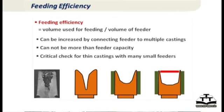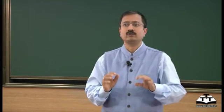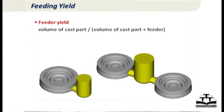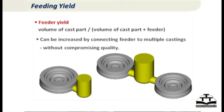Capacity is what a feeder can actually supply; efficiency is what is actually supplied to a particular casting, and what is actually supplied cannot exceed the theoretical capacity. Yield — specifically feeding contribution to yield — is the actual volume of the cast part divided by the volume of the cast part with feeders. You can improve yield by connecting the feeder to multiple castings or by applying feed aids: applying an insulating sleeve or exothermic cover reduces the feeder size needed.